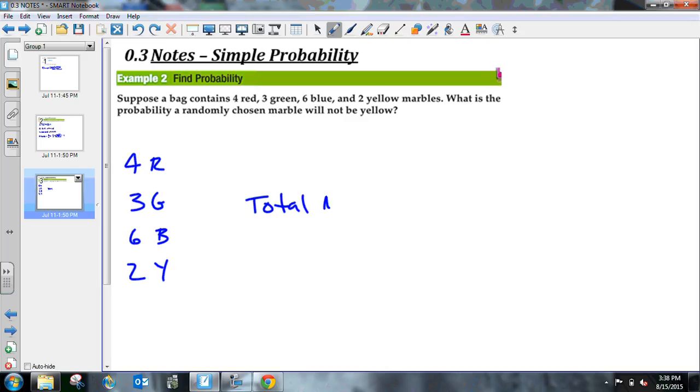How many total marbles do I have? What are my total options here? The total marbles is 4 plus 3 is 7, plus 6 is 13, plus 2 is 15. So I have 15 total marbles. I want to figure out what's the probability that if I chose a marble, it won't be yellow. The marbles that are not yellow are all the other marbles: 4 red, 3 green, 6 blue. So I've got 13 marbles that are not yellow.